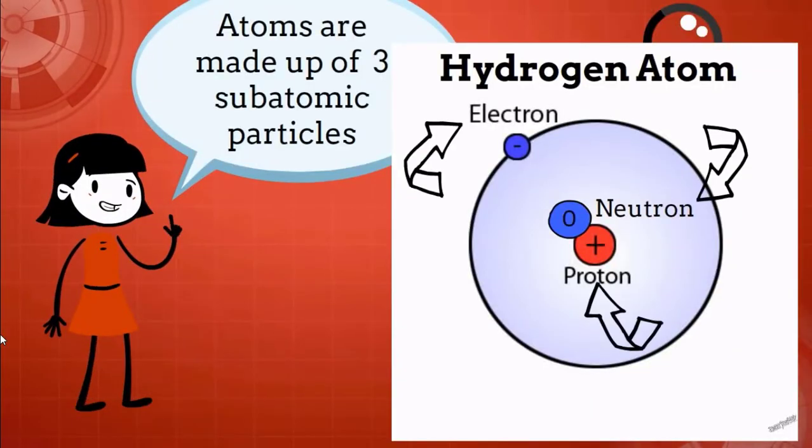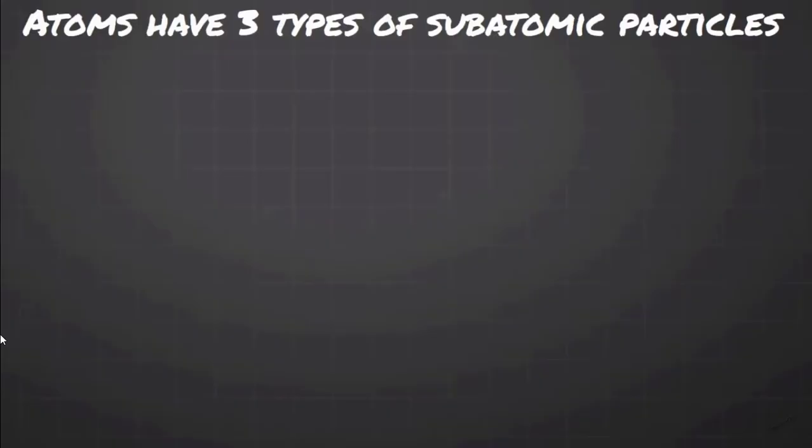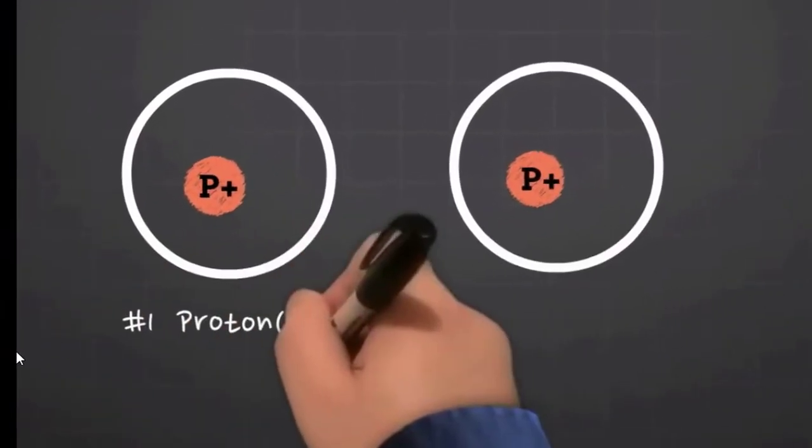Atoms are made up of three subatomic particles: protons, neutrons, and electrons.